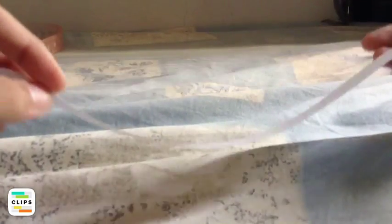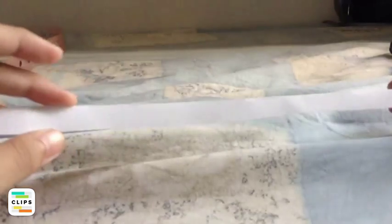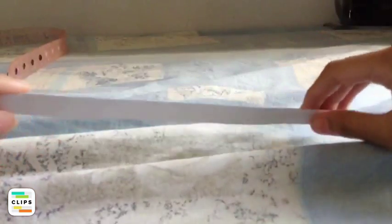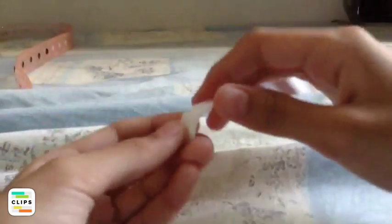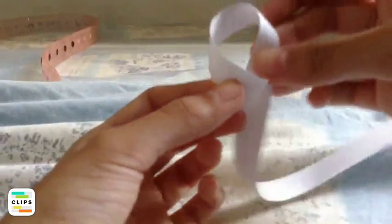Hey guys, so today I'm gonna make a paper origami star and it's super simple and easy. You're gonna need a strip that is straight.